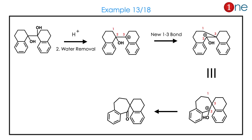Let us look at the next question. You have a phenyl-fused system with a diol — both are symmetrical. You protonate and remove the water. Ring expansion occurs: the 6-membered becomes a 7-membered ring, forming a spiro system. The system has some steric importance, and even though steric effects are present, the desired product is obtained.